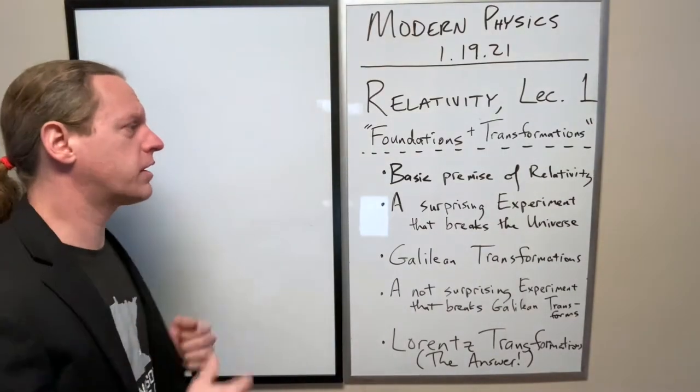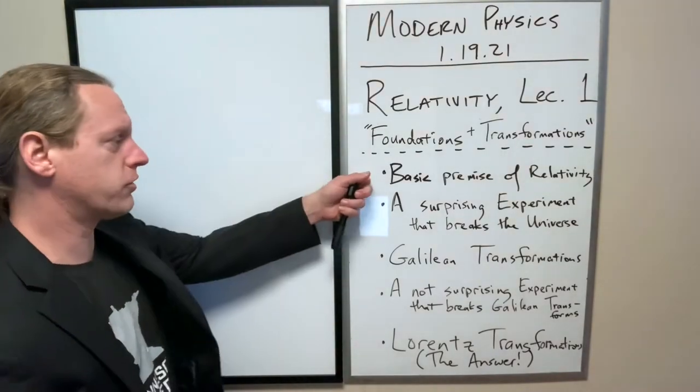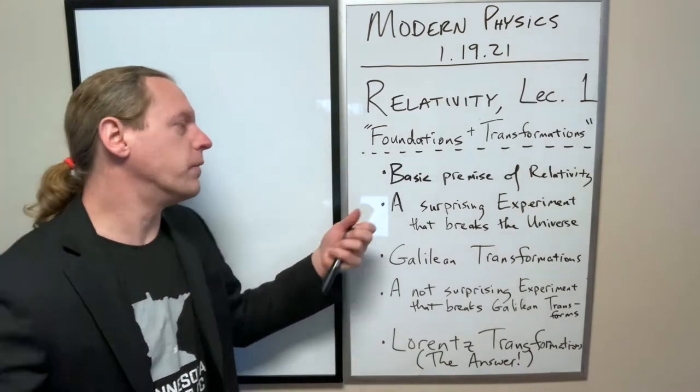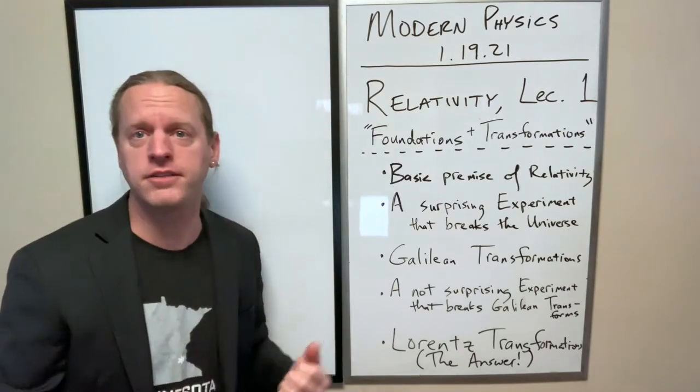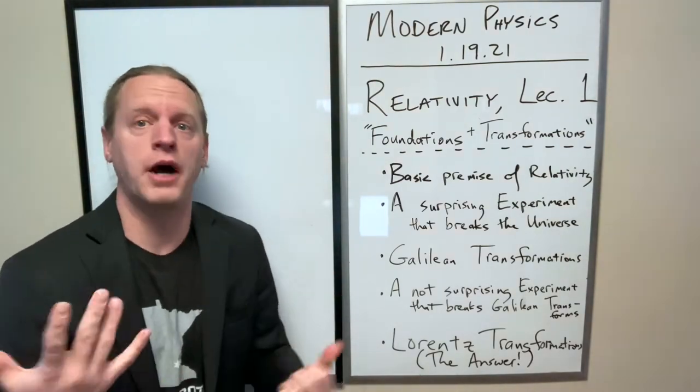We'll go through the basic premise or the basic assumptions of relativity, and then on from that, we're going to talk about one of the experiments that seemingly violates his basic assumptions about how the universe has to work.